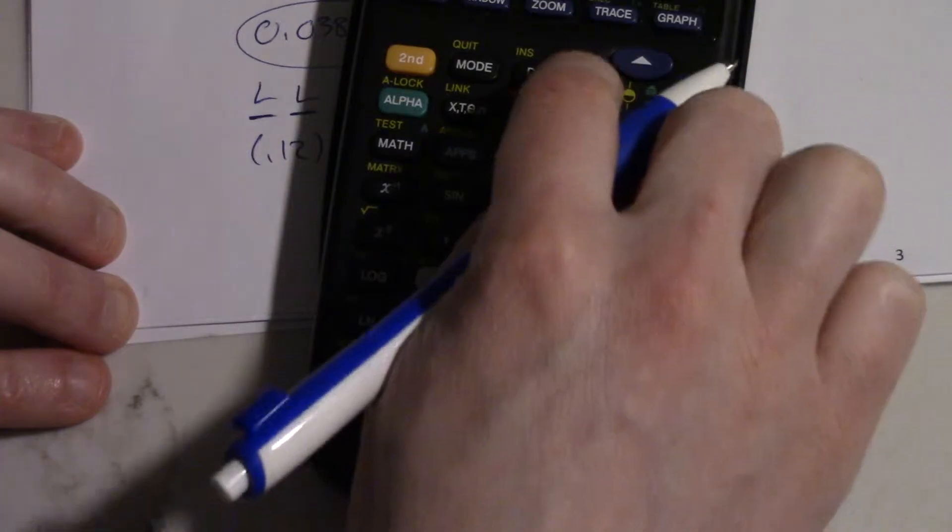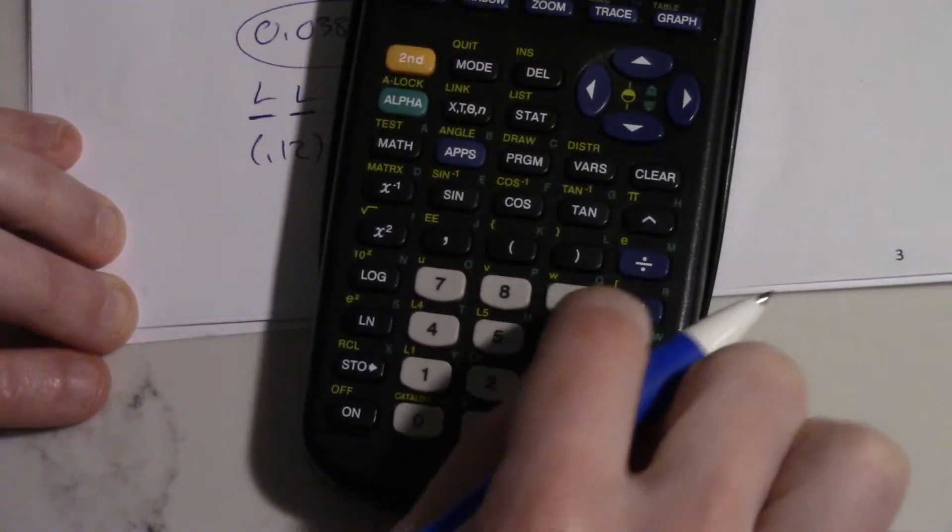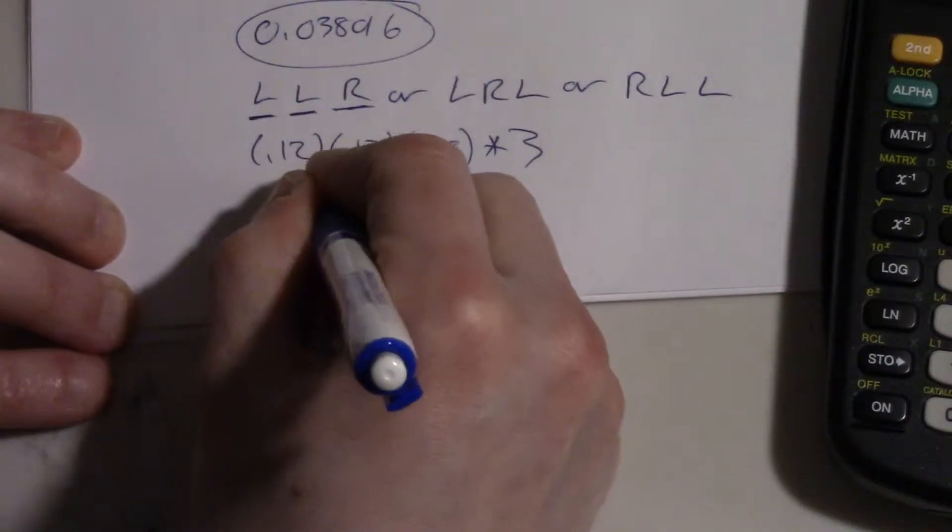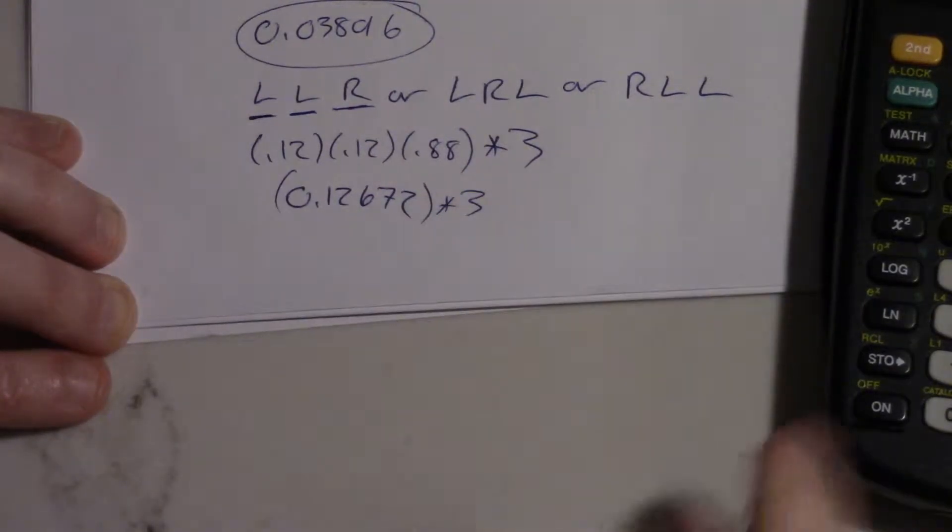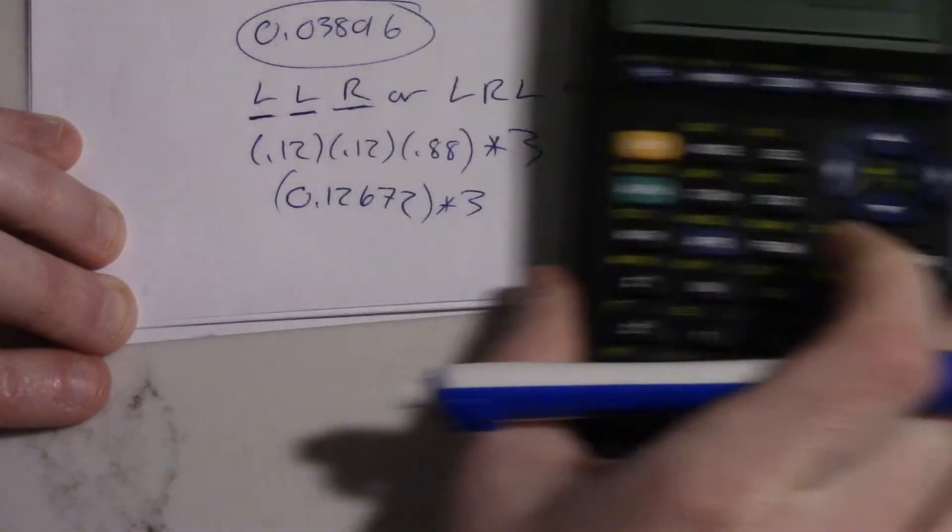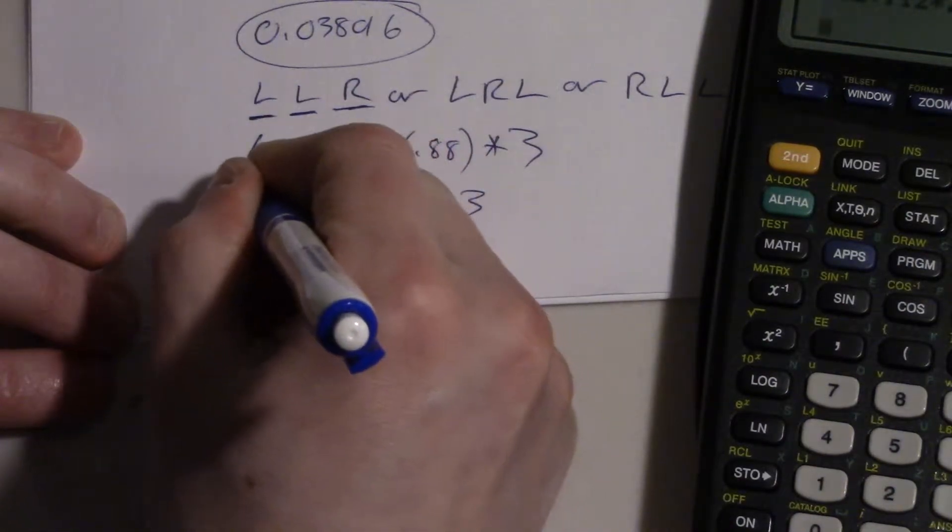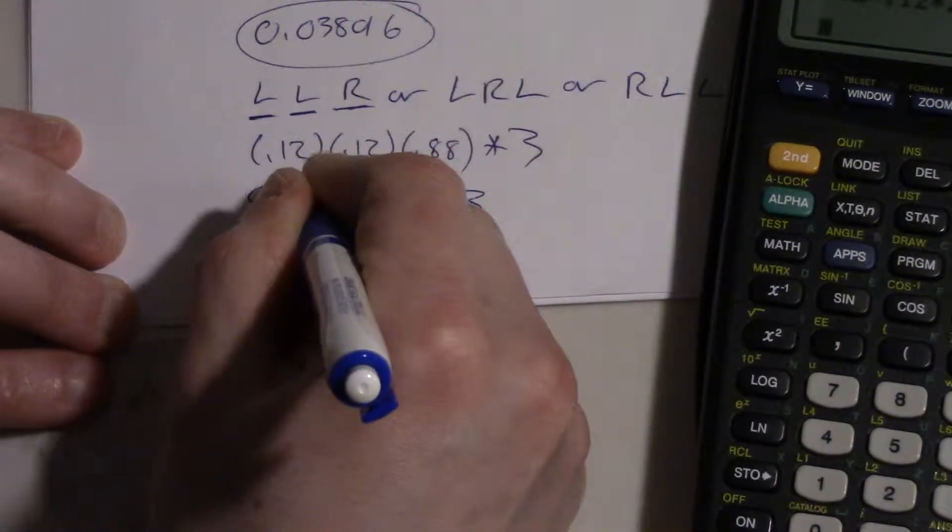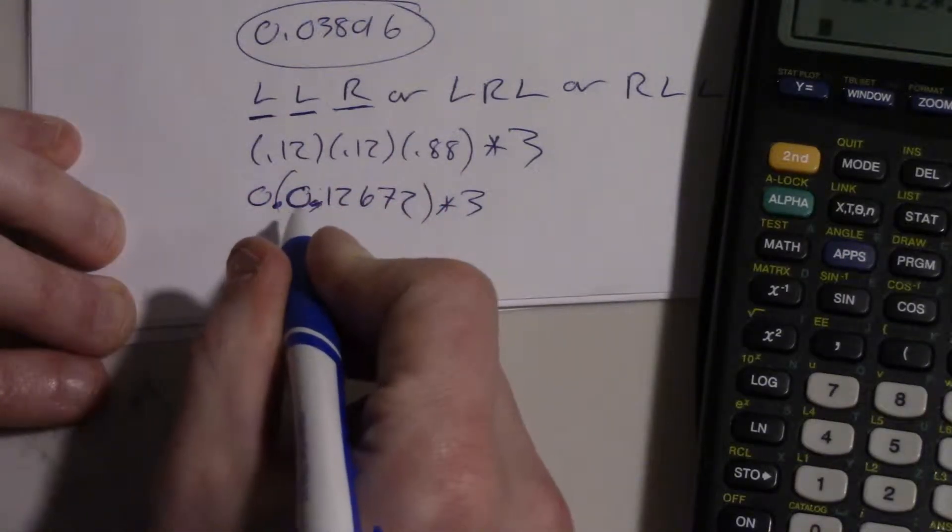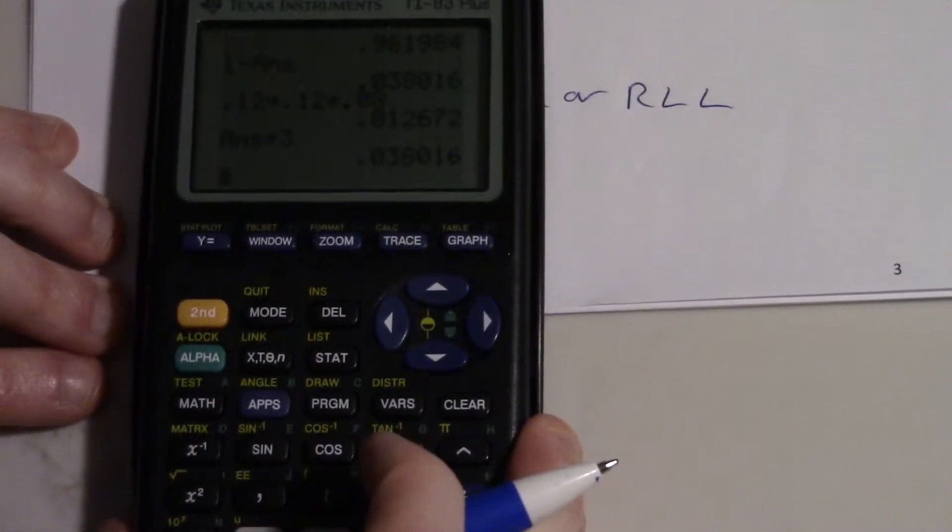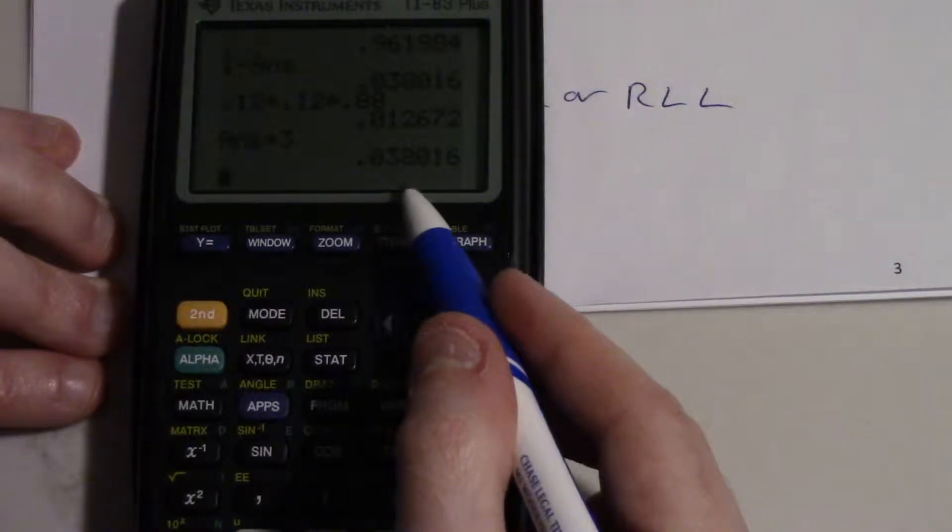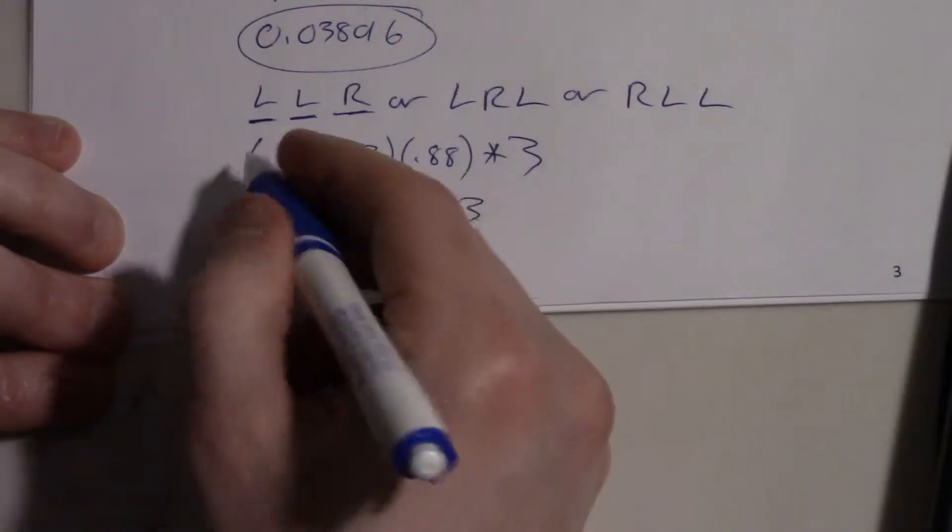0.12 times 0.12 times 0.88, so 0.12672 times 3. Oops, I forgot. 0.012672 times 3. And we get 0.038016, which is what we had before.